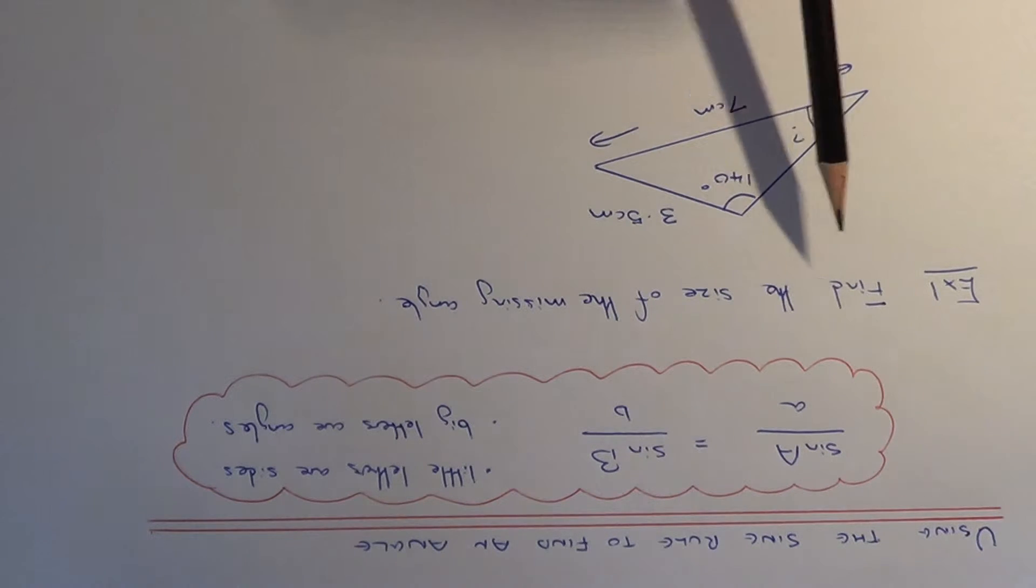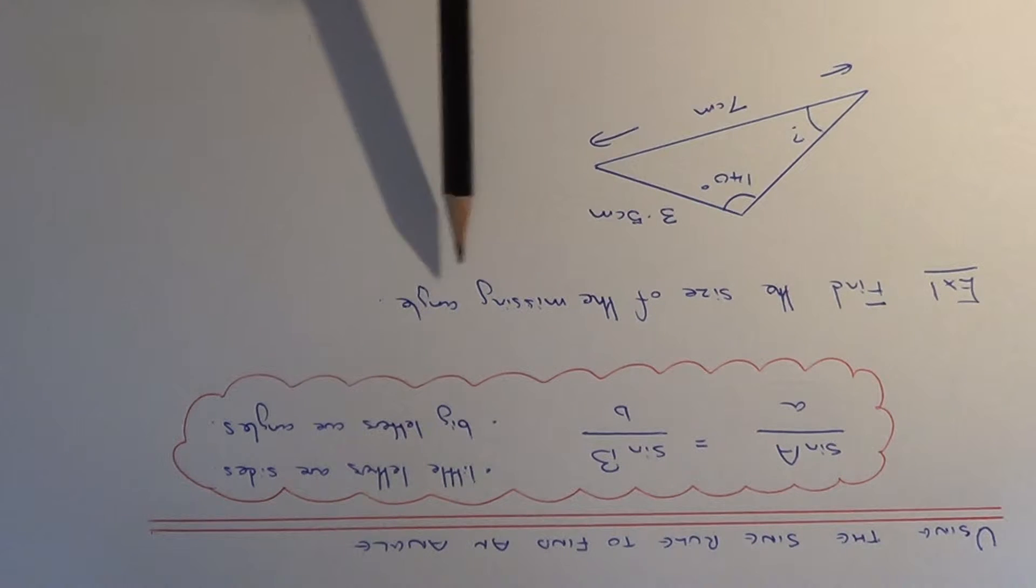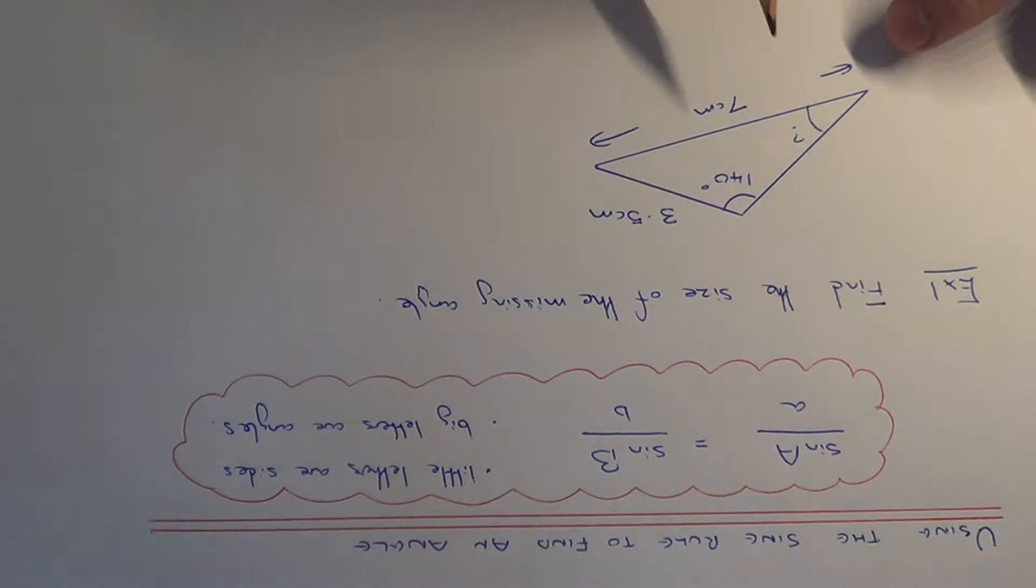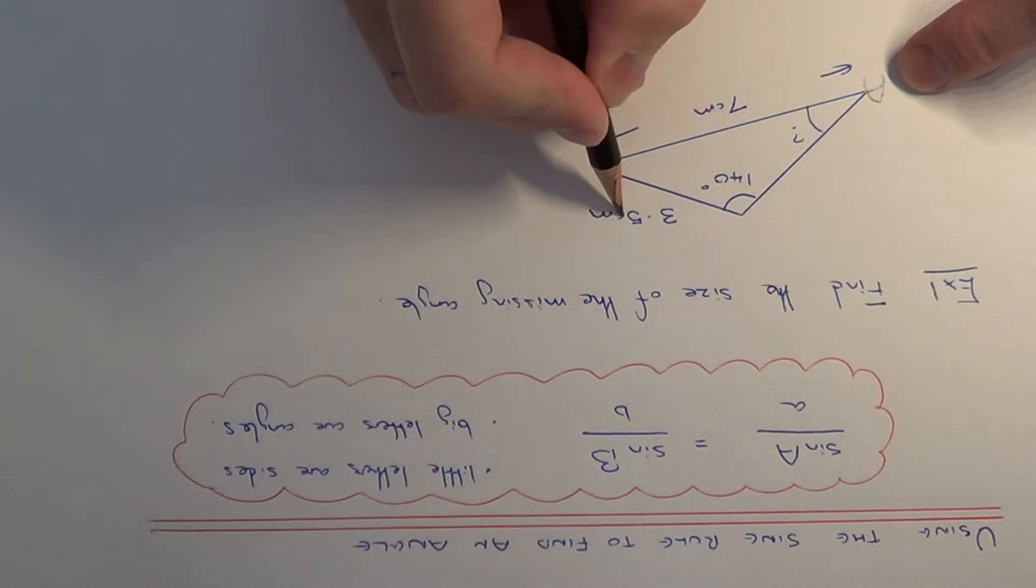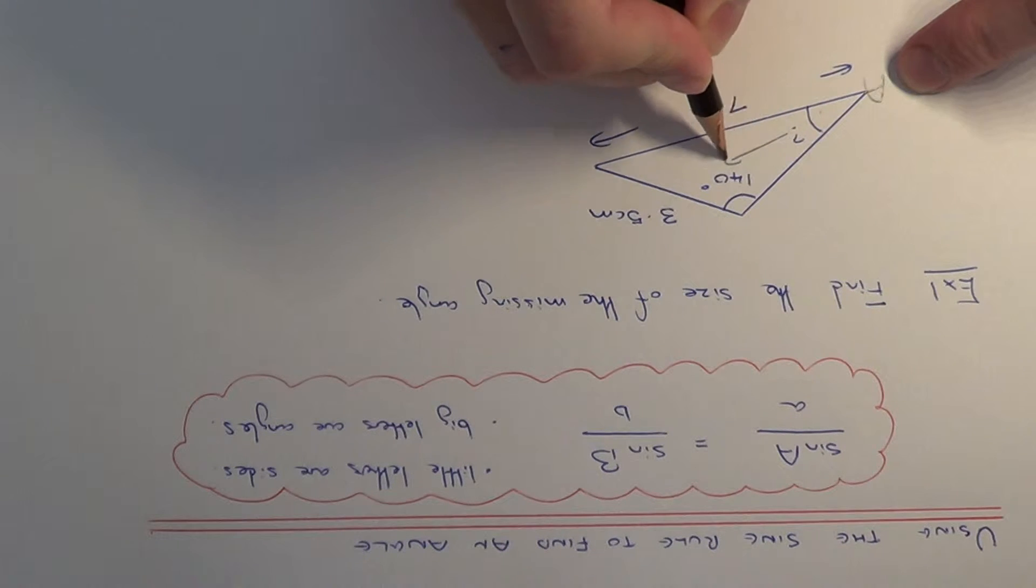Let's have a look at our example here. We've got to find the missing angle in this non-right angled triangle. We're after this angle here, so we call the angle that we're going to find capital A. Since this side is opposite this angle, this side length here would be little a.